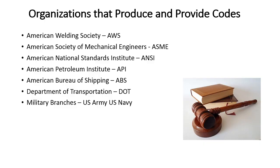There are a lot of organizations that produce and provide codes for welding and construction: the American Welding Society, the American Society of Mechanical Engineers, the American National Standards Institute (ANSI), American Petroleum Institute (API), American Bureau of Shipping (ABS), Department of Transportation (DOT), and military branches including the U.S. Army and U.S. Navy. If you're building something for the U.S. Navy, they've got their own set of codes and how they want things done.